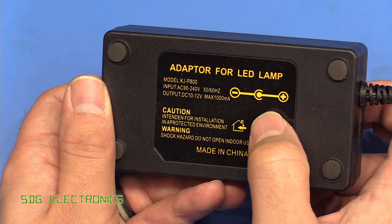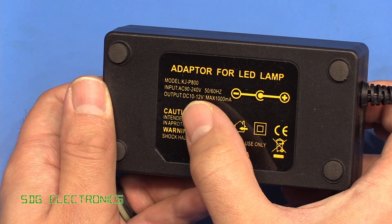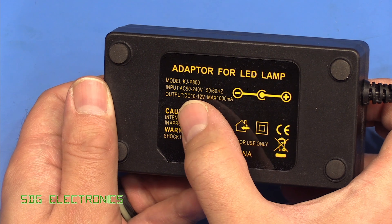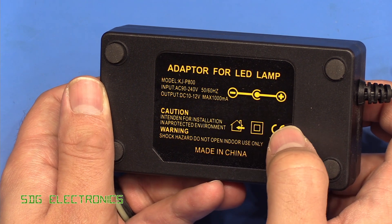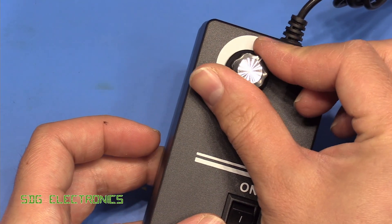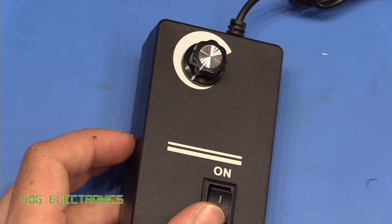Input is universal from 90 to 240 volts, then the output is 10 to 12 volts. Presumably that's the compliance voltage at a maximum of one amp, so we can dial up and down the current through the LEDs.